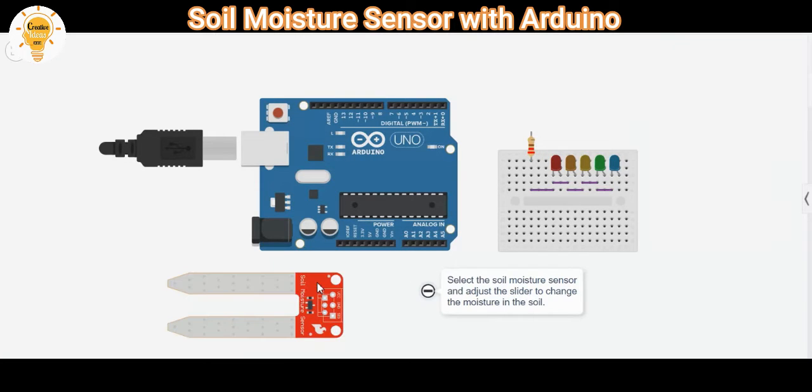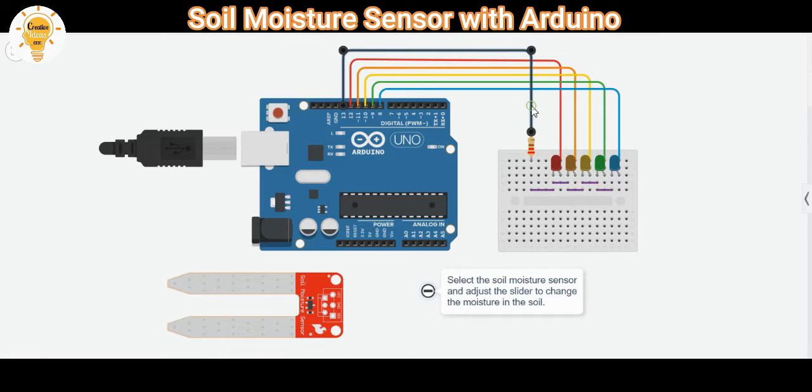The plant monitoring system is helpful for watering the plants and monitoring a few parameters for the growth of plants. This system is very useful in a few areas like nursery farms and in agriculture.